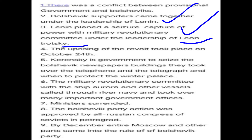Alexander Kerensky, leader of the Menshevik party and provisional government, learned of the Bolshevik secret seizure and ordered his men to capture Bolshevik-held regions. But the Bolsheviks used ship Aurora through River Neva, captured the Winter Palace, and ministers surrendered. The Bolsheviks were supported by the All-Russian Congress and completed their rule over all of Russia, including Moscow, by December.